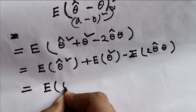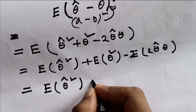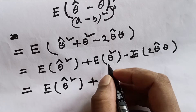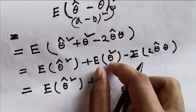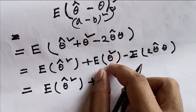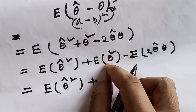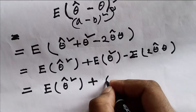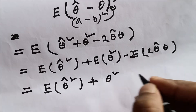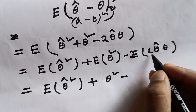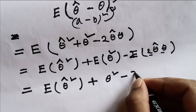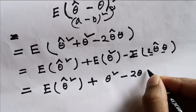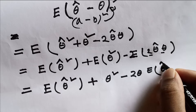We get: expectation of theta-hat squared, plus — since theta is a constant, the expectation of a constant is just the value itself — theta squared, minus two times theta times expectation of theta-hat. We pull the constant values two and theta out of the expectation.